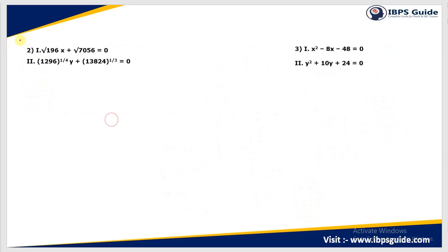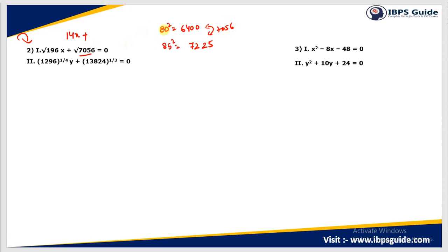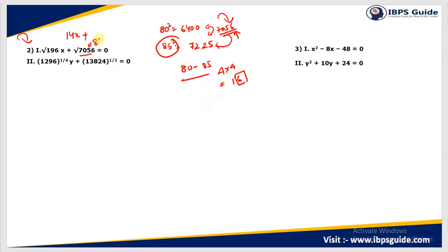Now let's move on to question number 2. They have given √196, which equals 14. So 14x plus something equals 0. We know 80² = 6400 and 85² = 7225. The number 7056 lies between these two, so its square root lies between 80 and 85. Since 7056 is closer to 7225, the answer is closer to 85. Looking at the last digit — it is 6, and 4 × 4 = 16 — so the answer is 84. Therefore: 14x + 84 = 0.